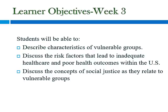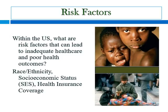Within the U.S., what do you think are some of the risk factors that can lead to inadequate health care and poor health outcomes? Think about populations that you've seen in your area of practice, whether it's in the acute care setting, in the community, long-term care settings, or in the schools. Do you see race and ethnicity as a risk factor? How about socioeconomic status or health insurance coverage?